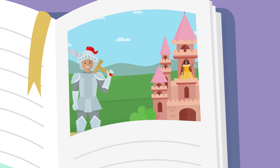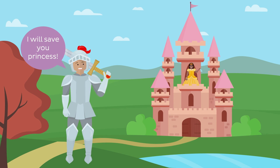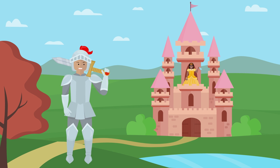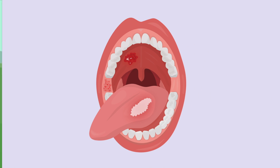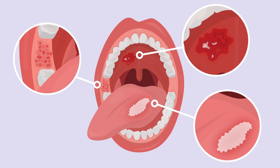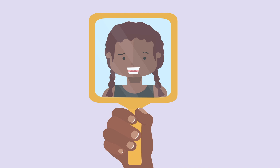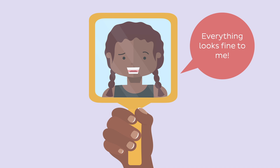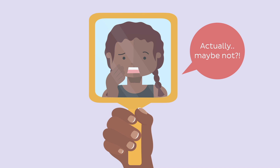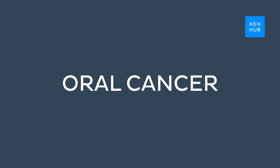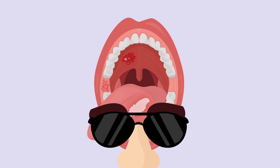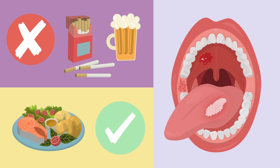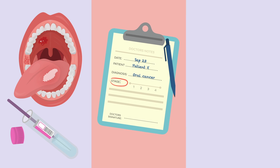I bet you've heard stories about villains who cunningly disguise themselves as the good guys so that they can unsuspectingly inflict evil. Like a wolf dressed as a sheep, the condition we'll discuss today can fool affected people into believing it's just a common, harmless disease, whereas in reality it's a much more serious problem. The condition we're talking about is oral cancer, and in this video we'll learn about how to prepare ourselves not to be fooled by its innocent-looking disguise, as well as what we can do to prevent it, how we can diagnose it, stage it, and treat it.